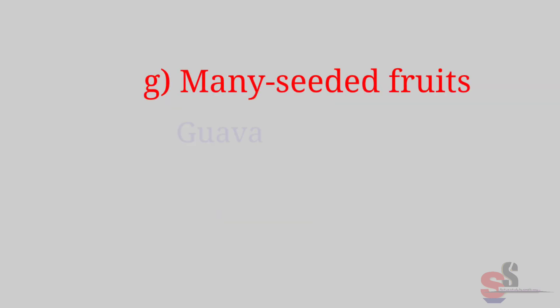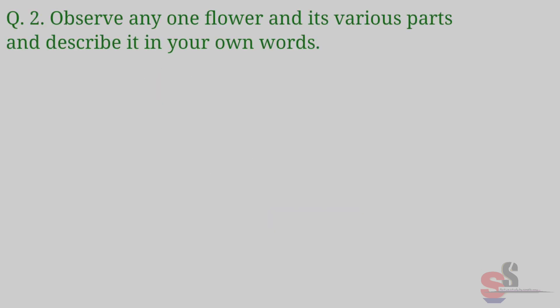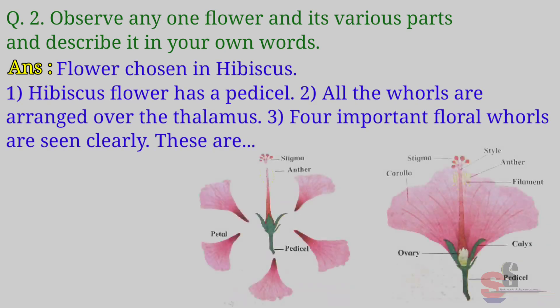F. Single seeded fruits — Mango, Berries, Cashew. G. Many seeded fruits — Guava, Jackfruit, Watermelon. Question 2: Observe any one flower and its various parts and describe it in your own words. Answer: Flower chosen is Hibiscus. Hibiscus flower has a pedicel. All the whorls are arranged over the thalamus.